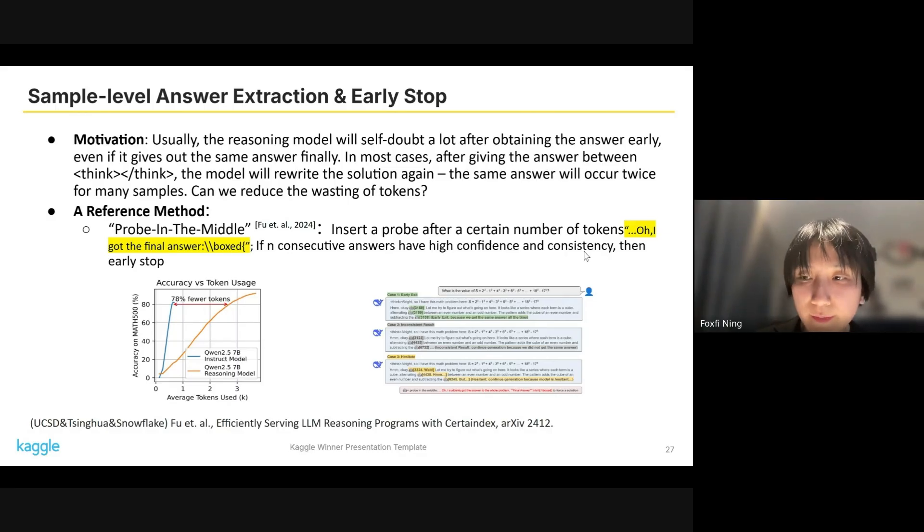There is a reference method called Probe-in-the-Middle. It inserts a probe after a certain number of tokens. The probe is 'I got the final answer.' And if n consecutive answers have high confidence and consistency, then it will early stop the generation.